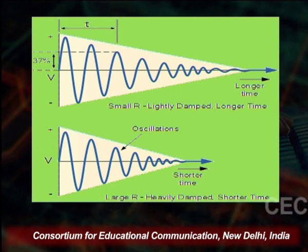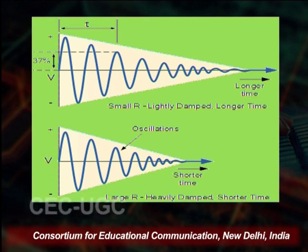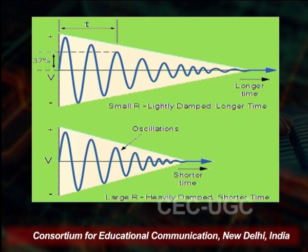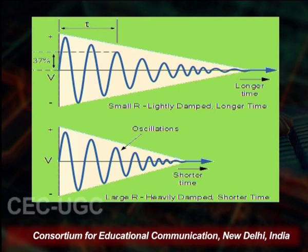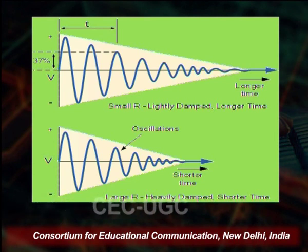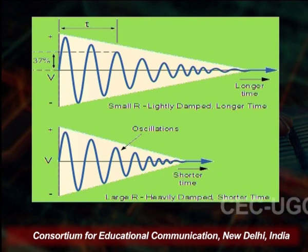So we have two conditions: small r gives lightly damped oscillations over a longer time, and larger r gives heavily damped oscillations over a shorter time.